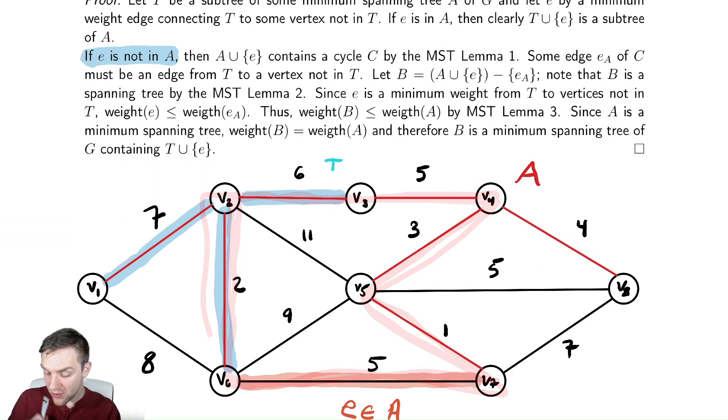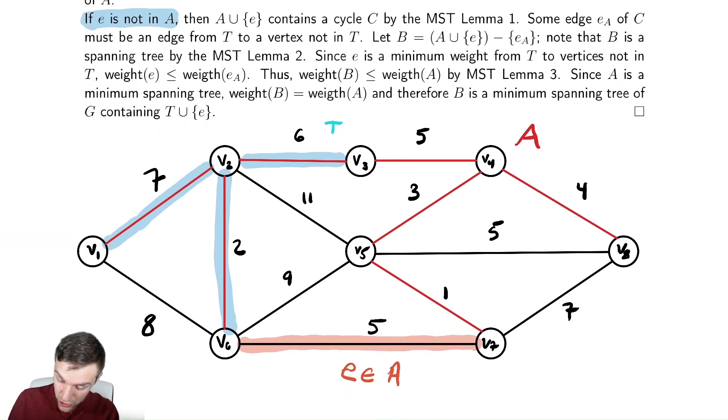Looking at that cycle, at least one other edge in that cycle must connect T to a vertex not in T. So, in this example, that would be this edge up here. And what we're going to do is consider the tree that has E as an edge, but not this other edge that was part of A. So, let's read that in the proof. Some edge E sub A of C must be an edge from T to a vertex not in T. So, that's this edge here. Let's label that as a vertex. That edge there is what we're going to define E sub A to be. And we're going to define B to be the subtree where we take out E sub A and add in E.